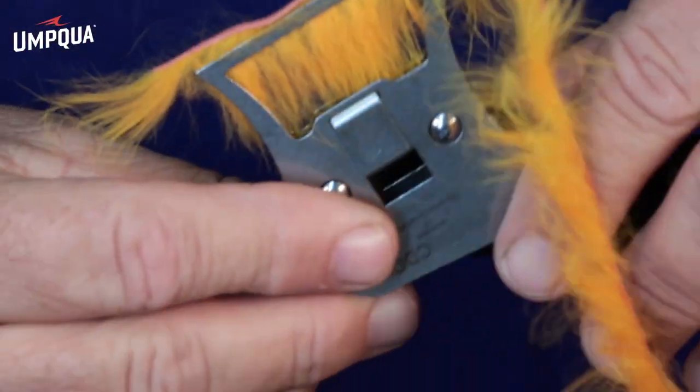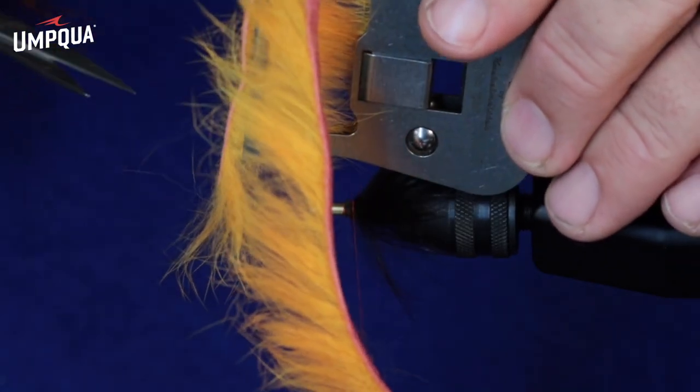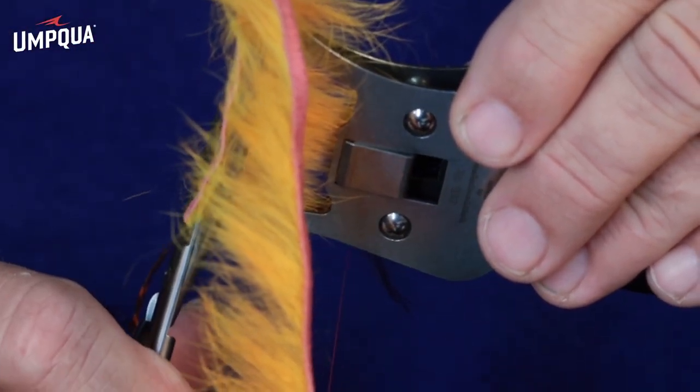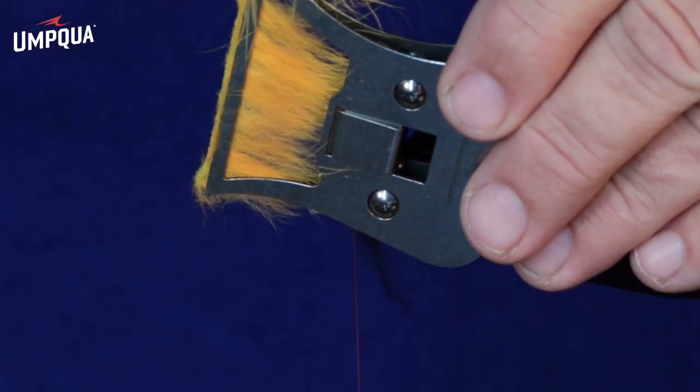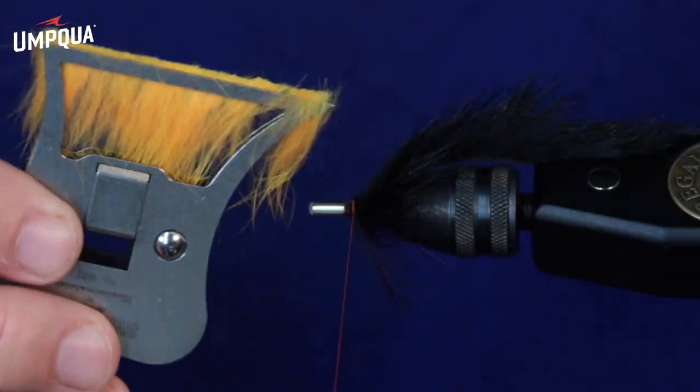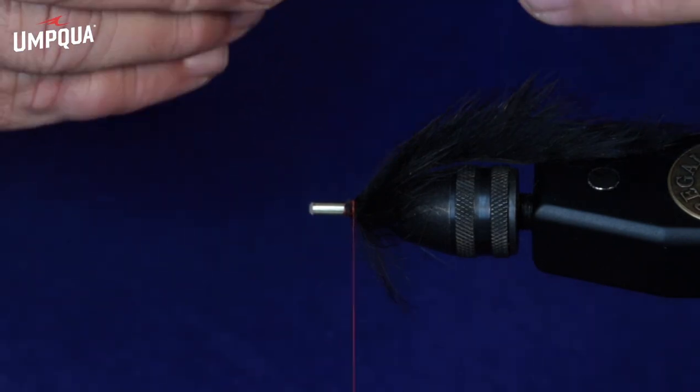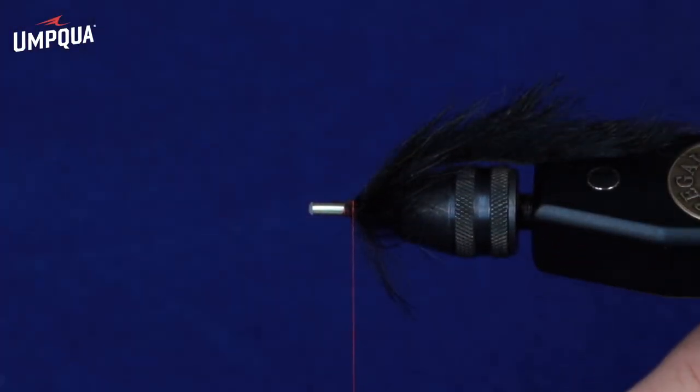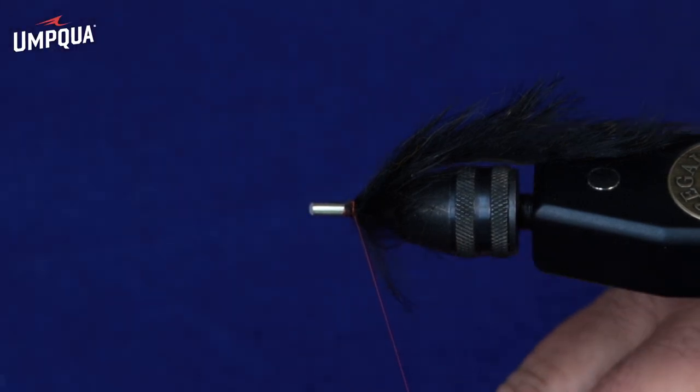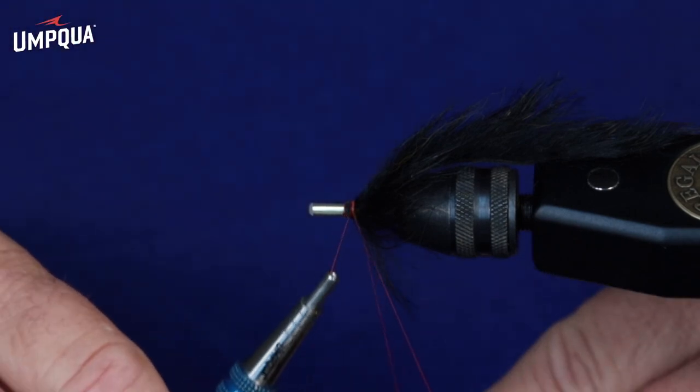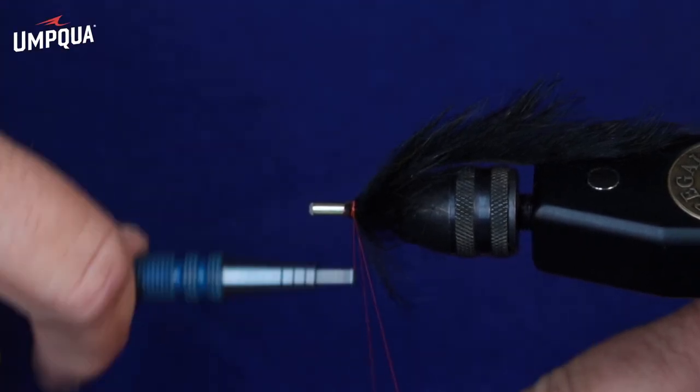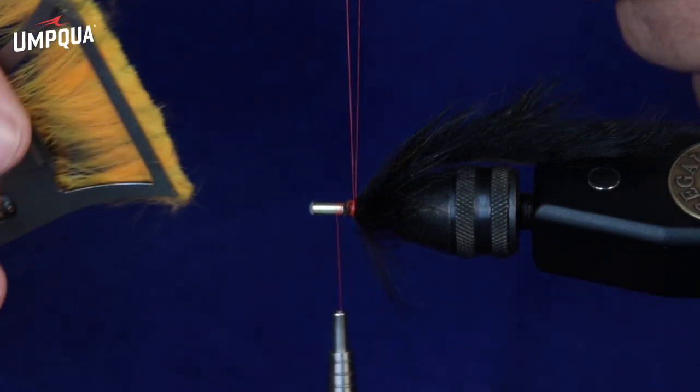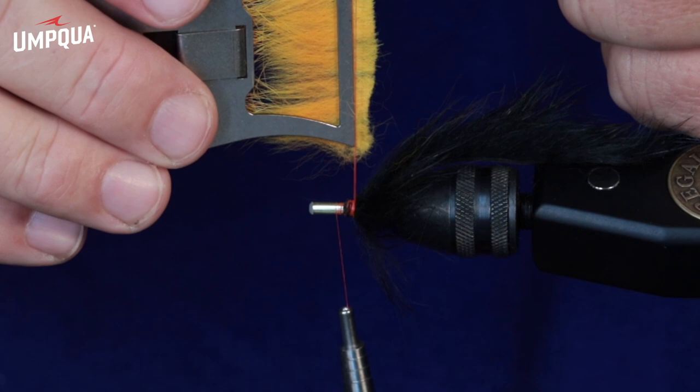And what I've done here is I've taken some rabbit strip and put it in a clip, and I'm just going to clip it right off the hide, and then I'm going to insert this into a dubbing loop. So, our rabbit's ready. I'll just create about a 5-6 inch dubbing loop. This isn't the easiest. I'm trying to demo it like this, but we'll get it done.